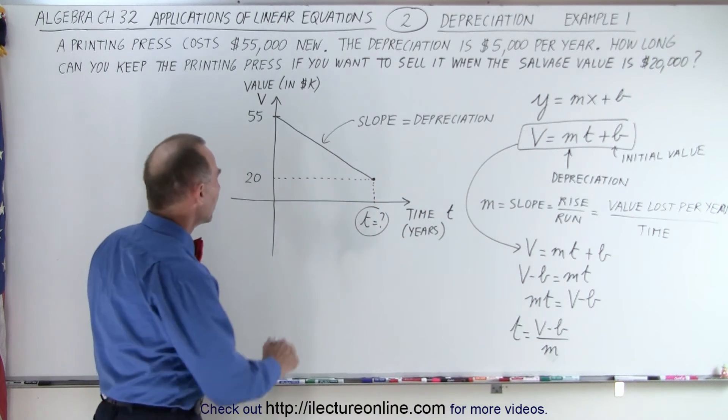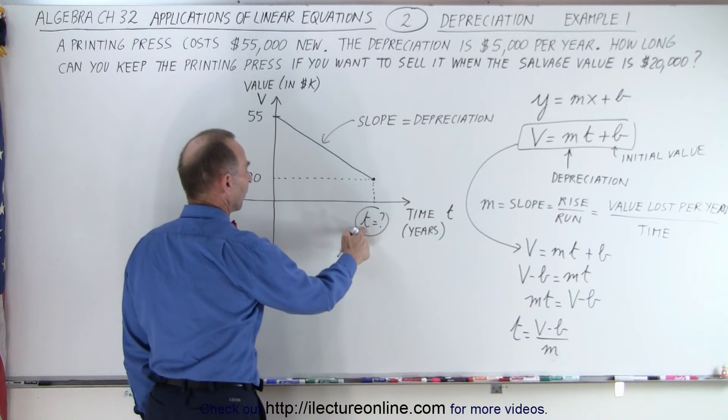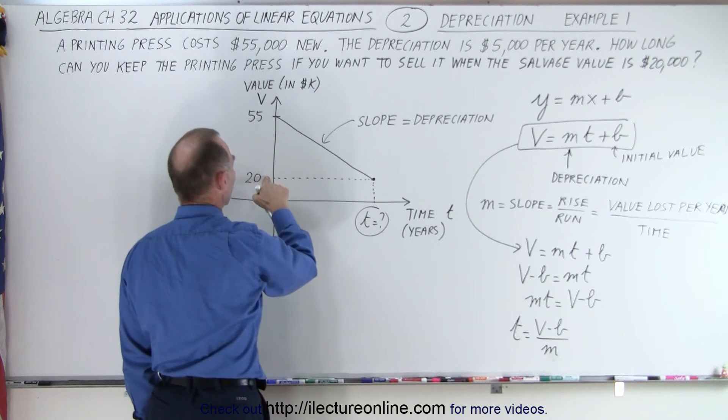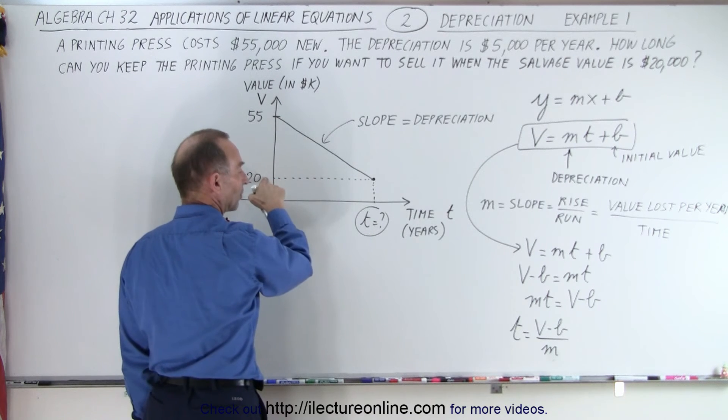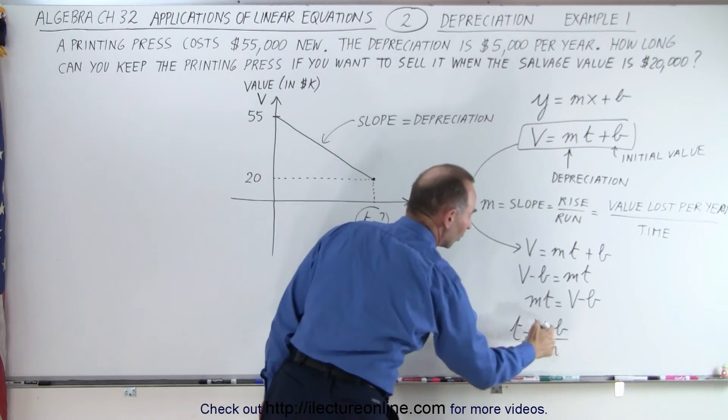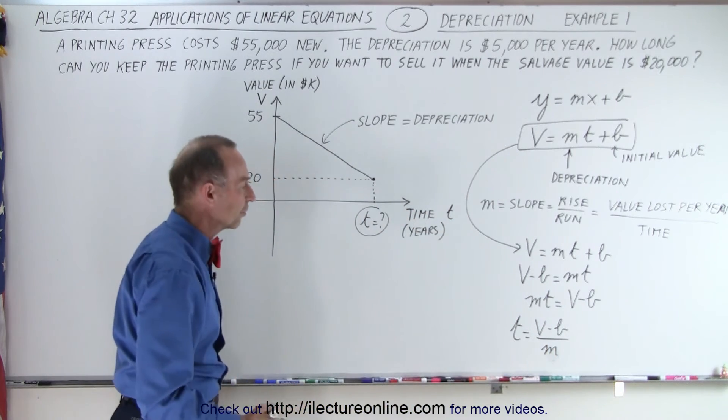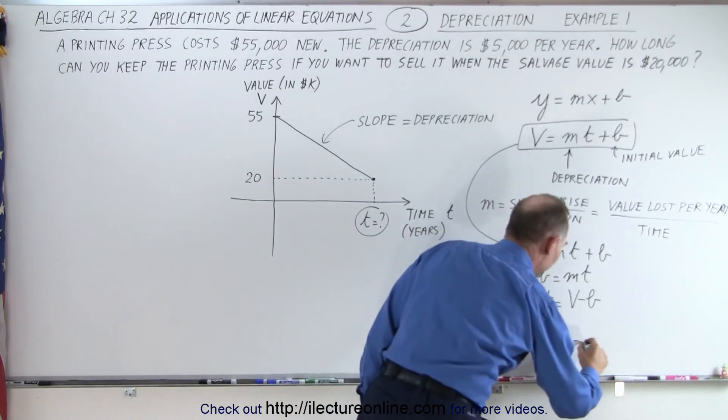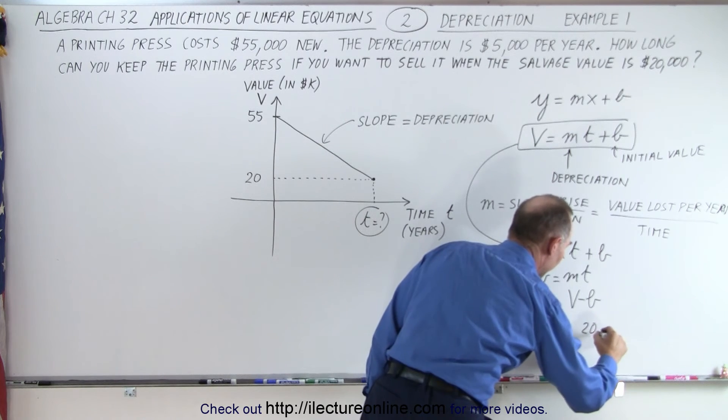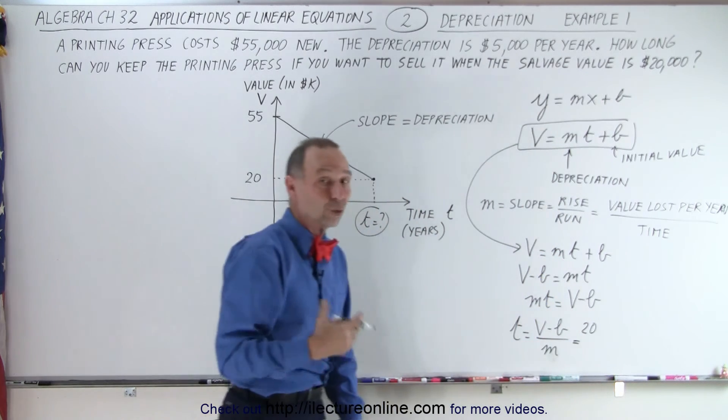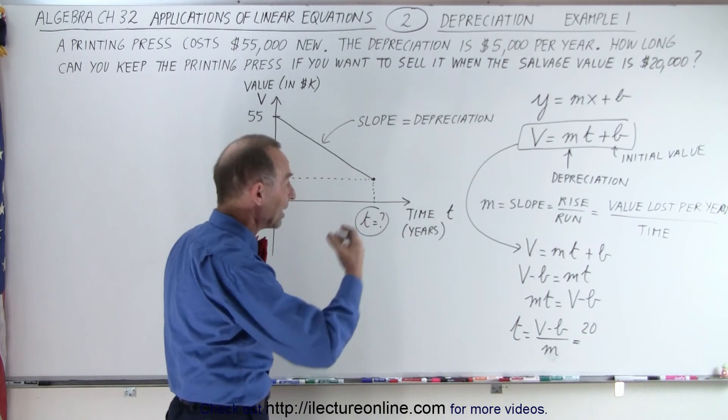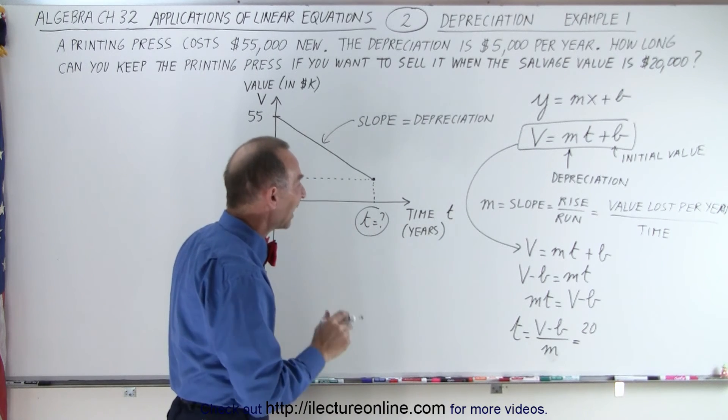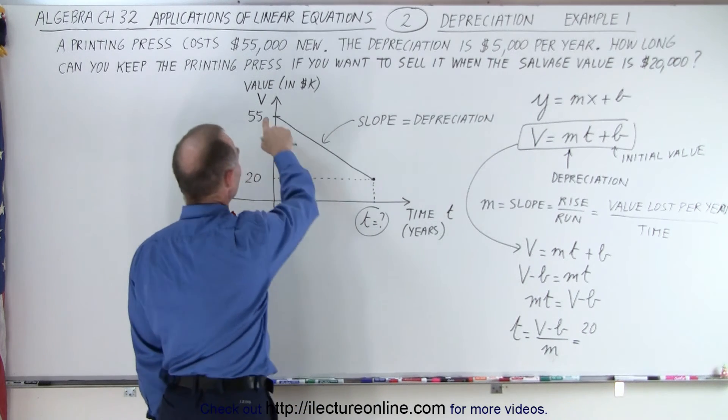So t is what I'm looking for. v is the value that I have right here. So when I sell the object, b is the original price. So the selling value will be 20,000. In this case, I'm just going to write 20 because I'm using k dollars, thousands of dollars minus b. b is what I paid for initially. That would be minus 55.